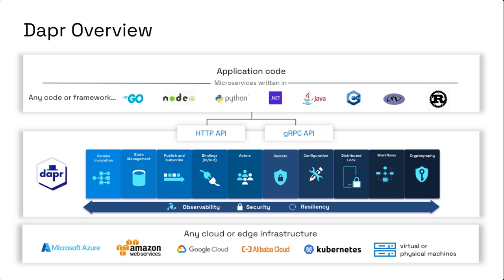So how does Dapr actually work? In the middle of the architecture diagram, we see several building blocks: service invocation, state management, publish/subscribe, and more — each representing a challenge developers face when building distributed applications, now codified through Dapr. You communicate with Dapr over an HTTP or gRPC API from your code, offloading responsibility and moving plumbing code from application logic into Dapr. Dapr can run on any infrastructure — Kubernetes being the typical target, but also local machines or virtual/physical machines.